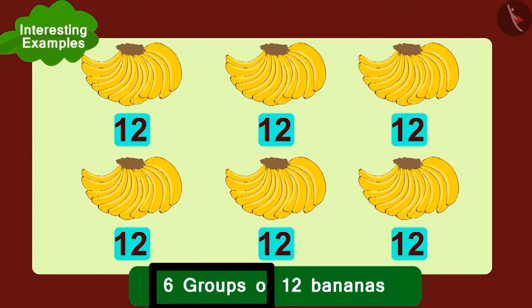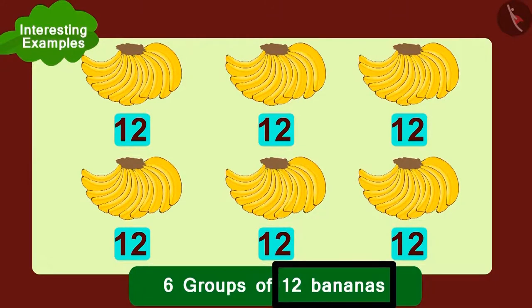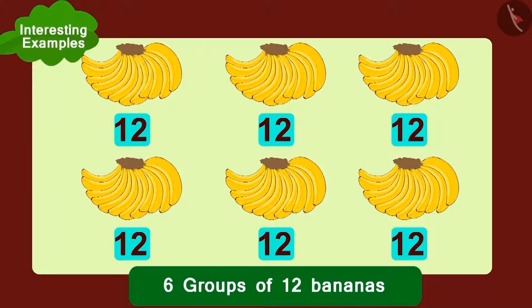Golu had arranged six groups of twelve bananas each in this way. Children, can you write the number of bananas Golu had in the form of multiplication?